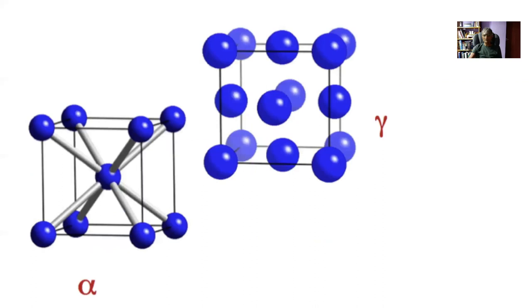The structures that we are interested in are illustrated here. We have the austenite which has a cubic F lattice with a motif of an atom at each lattice point, and we have the body-centered cubic lattice with an atom at each lattice point. That's ferrite and that's austenite and we use the symbols alpha and gamma respectively.